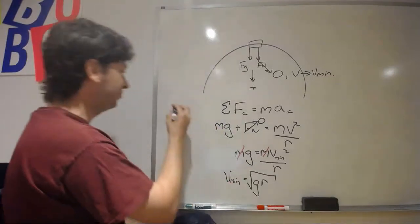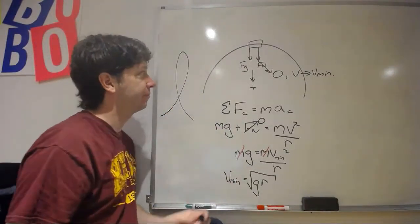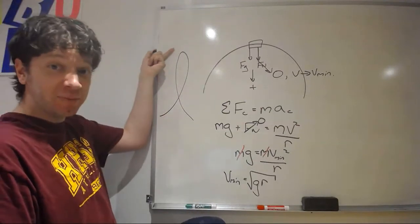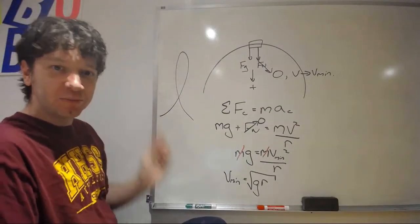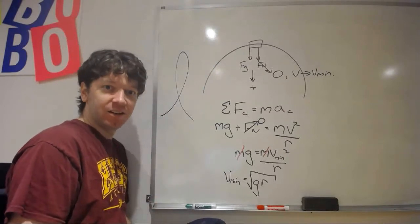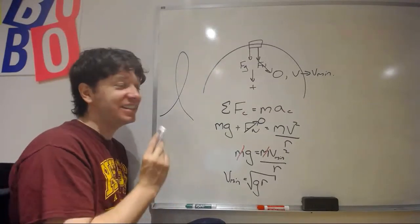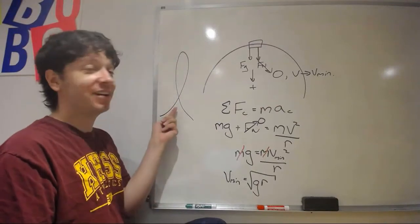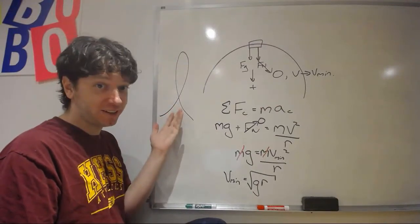Nowadays, a loop looks like this. It'll go up to the exact same height that other ones went to, but the minimum velocity is a lot less. Isn't that strange? They reach the exact same height, but this one can go a lot slower in order to make it around. Why?